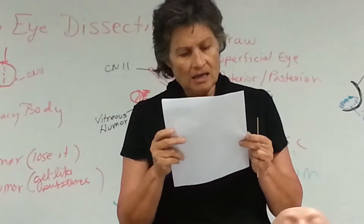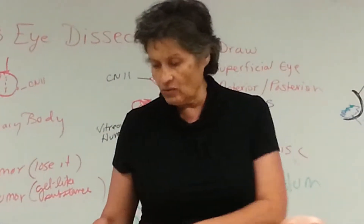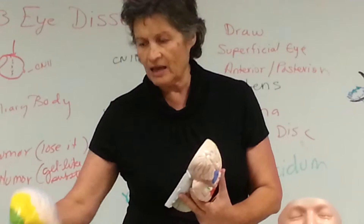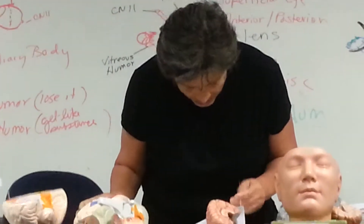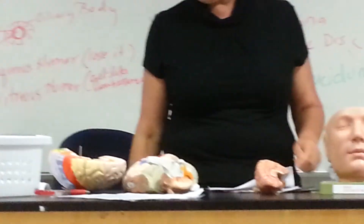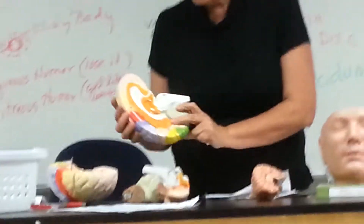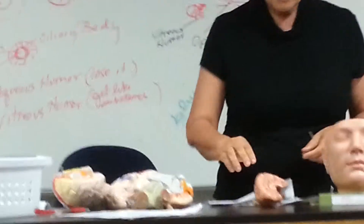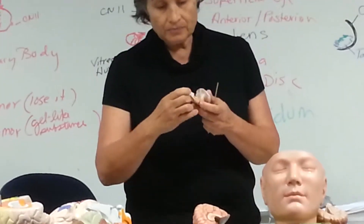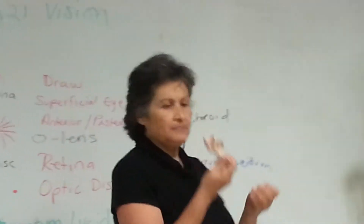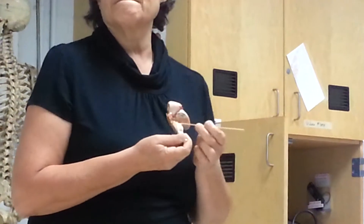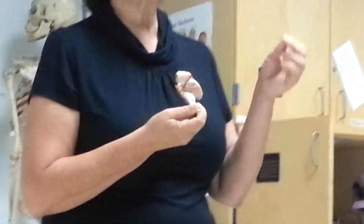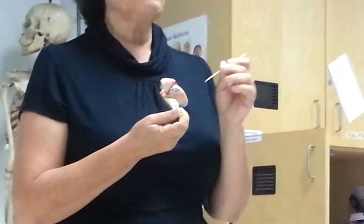Next is the right and left cerebral hemispheres — hope you know your right from your left. And next after that is the cerebral peduncle. Now this is where a lot of students get confused. You can't see it here, but you can see them here. So if you look at the midbrain — that's the very first part of the brain stem — you should see these tracks going up and down. That's the cerebral peduncle.